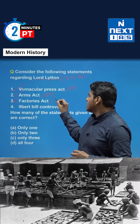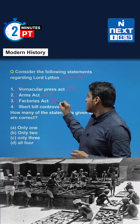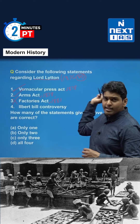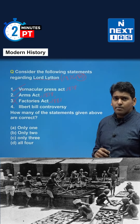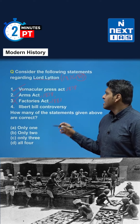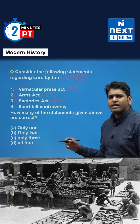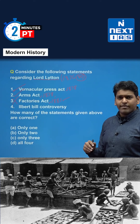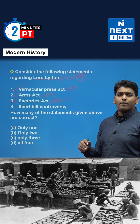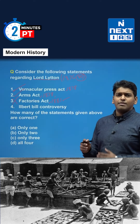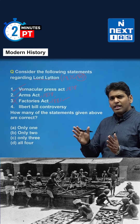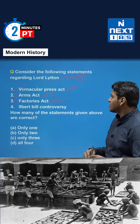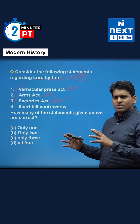The third option is the Factories Act — this is not correct, because it was passed in 1881, after Lytton's tenure ended in 1880. It was enacted under his successor, Lord Ripon. The Factories Act was a forward-looking piece of legislation: it prohibited employment of children under seven, and children between seven and twelve could not be made to work more than twelve hours.